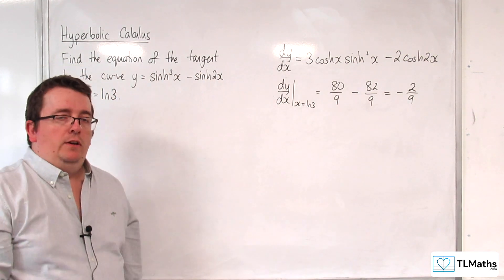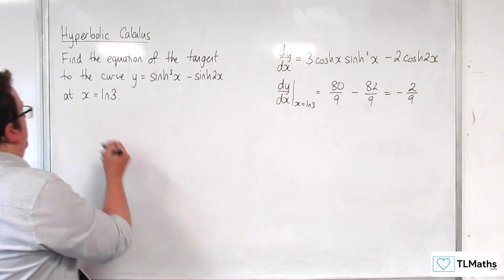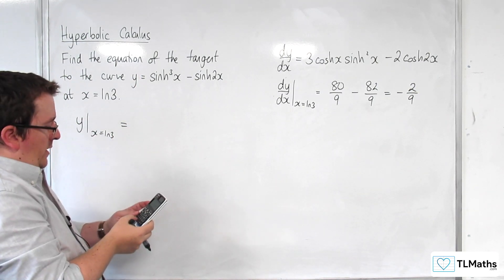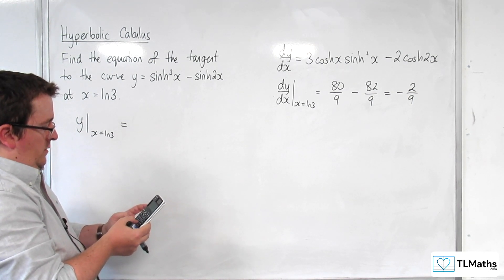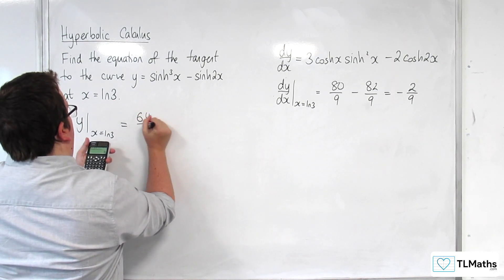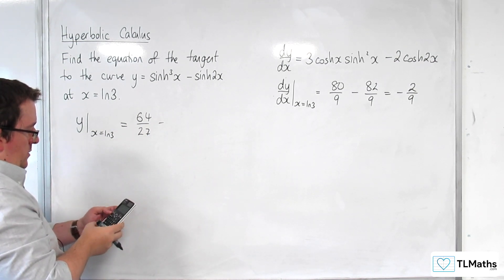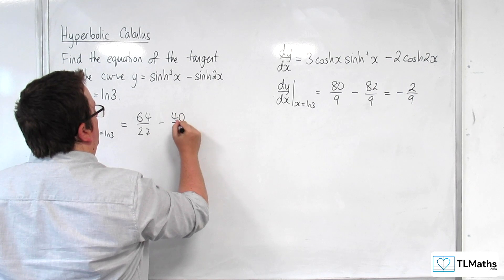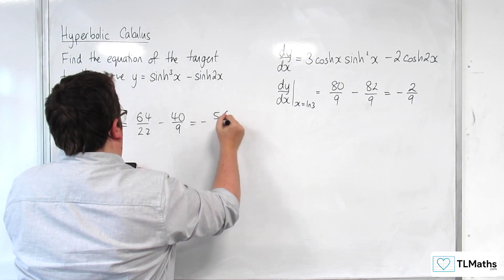So we should be getting minus 2/9 — that's the gradient of our tangent line. We just now need to know the y-value, so I need to substitute ln(3) into y. We get sinh³(ln 3), which is 64/27, take away sinh(2·ln 3), which gives 40/9. So 64/27 take away 40/9 is minus 56/27.